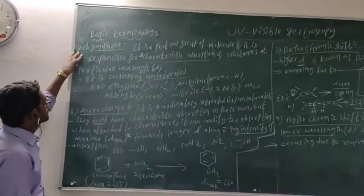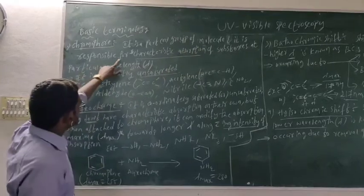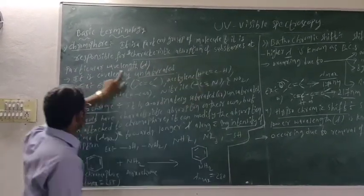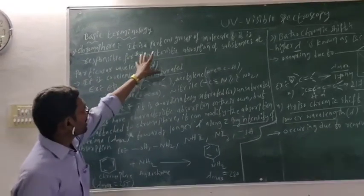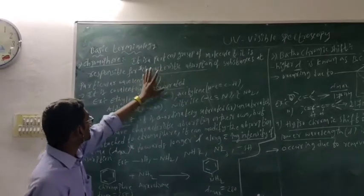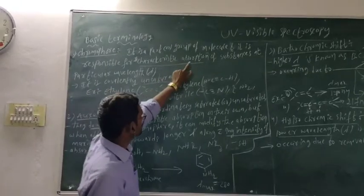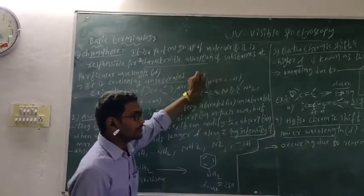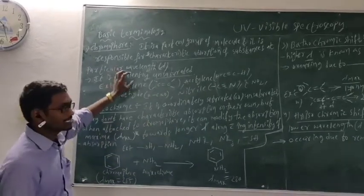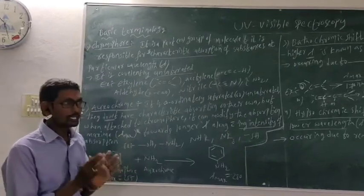First one: chromophore. Chromophore is a part or group of a molecule. It is responsible for the characteristic absorption of substances at a particular wavelength. If any substance is absorbing UV-Vis radiation, that compound consists of a chromophore. Without a chromophore, the molecule cannot absorb UV-Vis radiation. That is the important point.